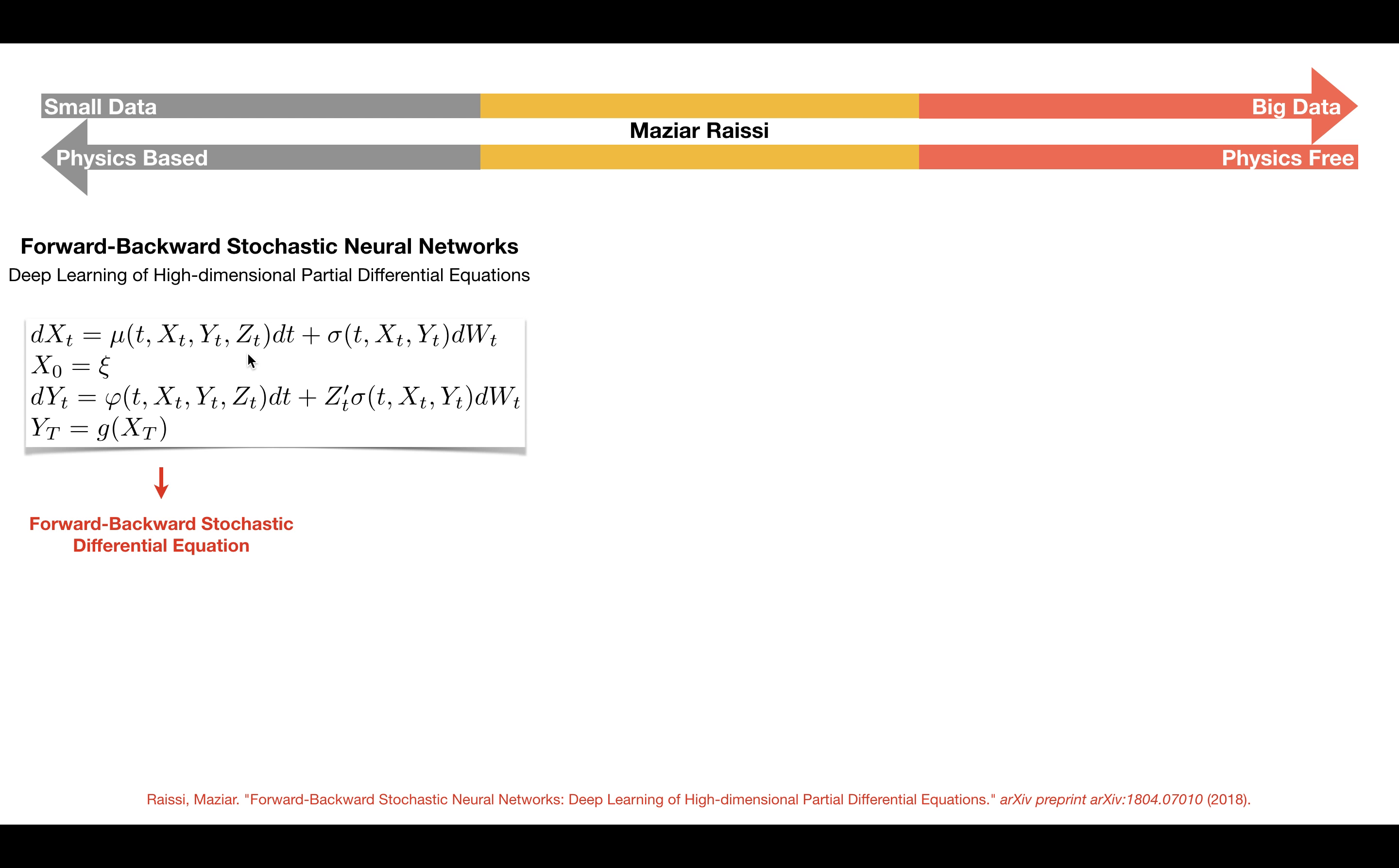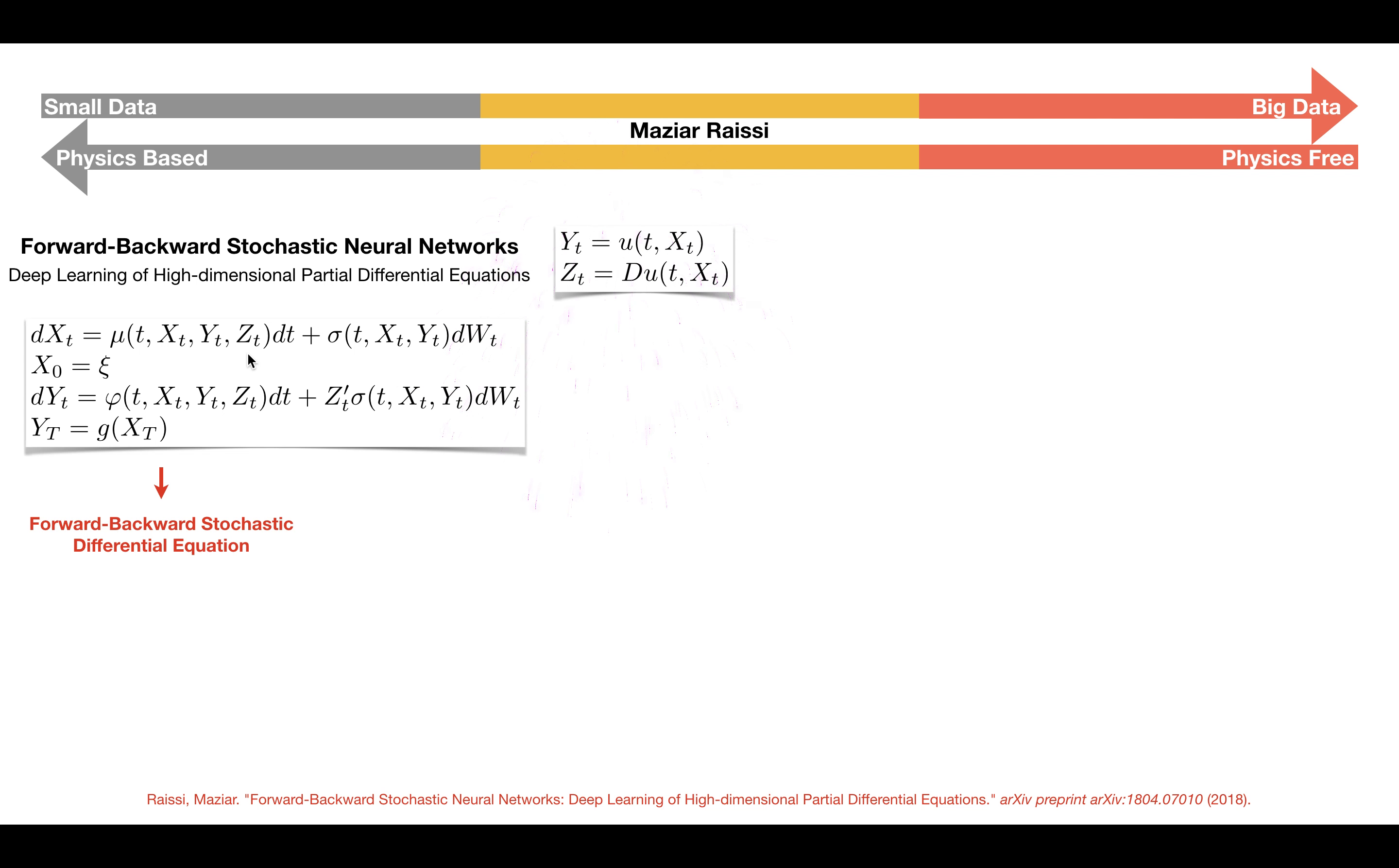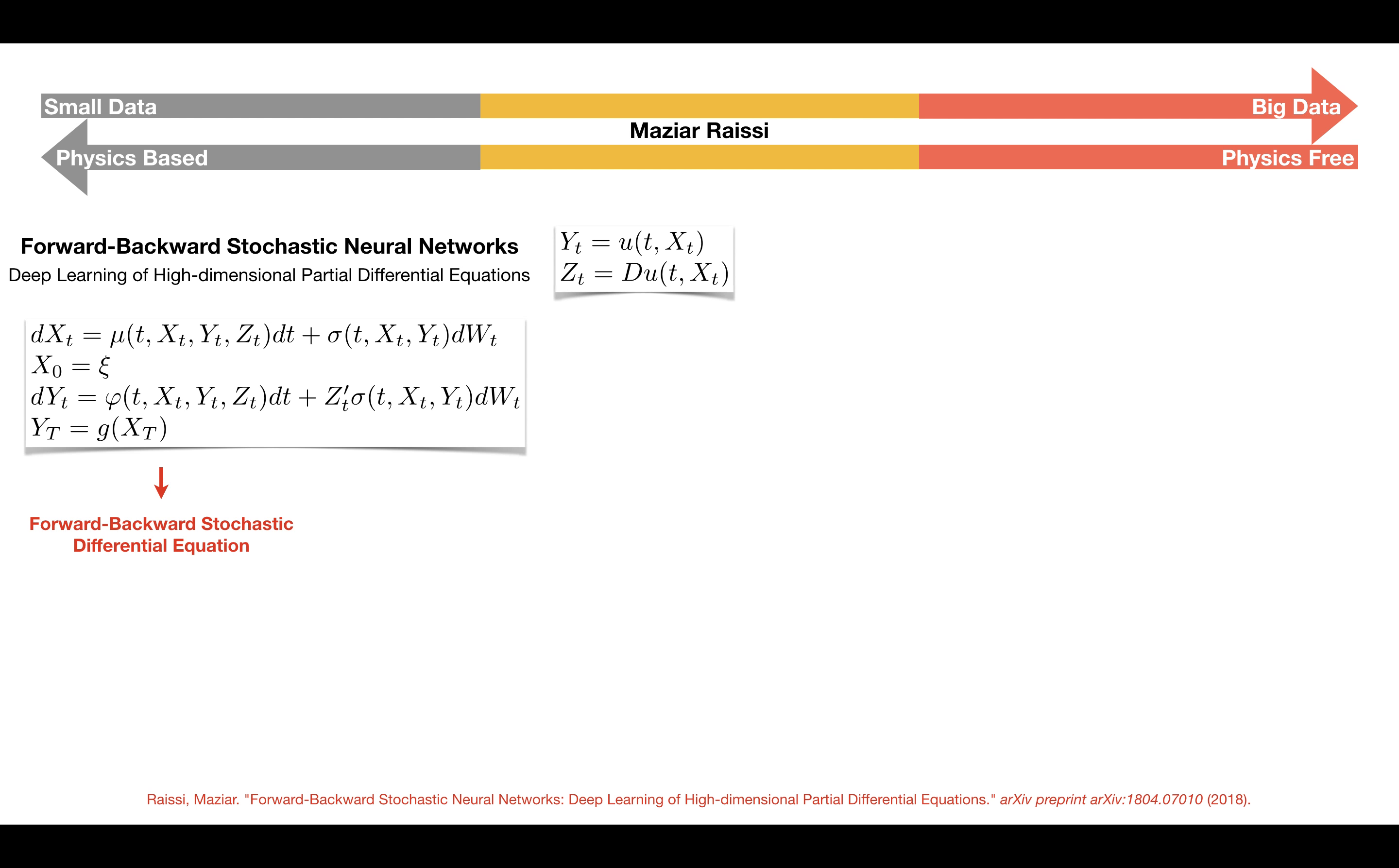The solution to a system of forward-backward stochastic differential equations can be expressed as a deterministic function of time and the state process X. Under suitable regularity assumptions, it follows directly from Ito's formula that the deterministic function U satisfies the following quasi-linear partial differential equation.